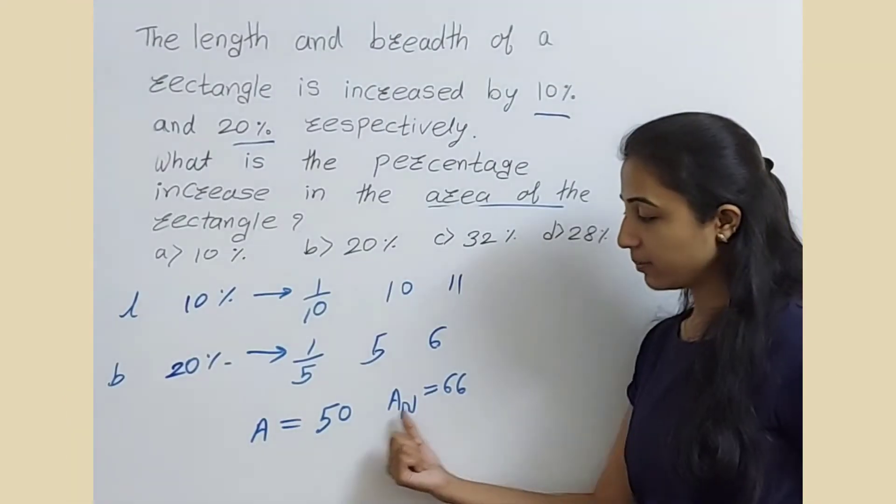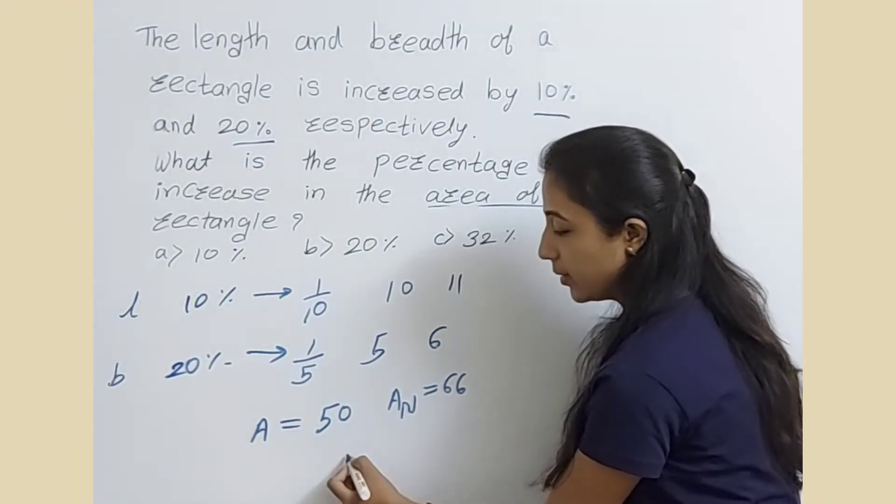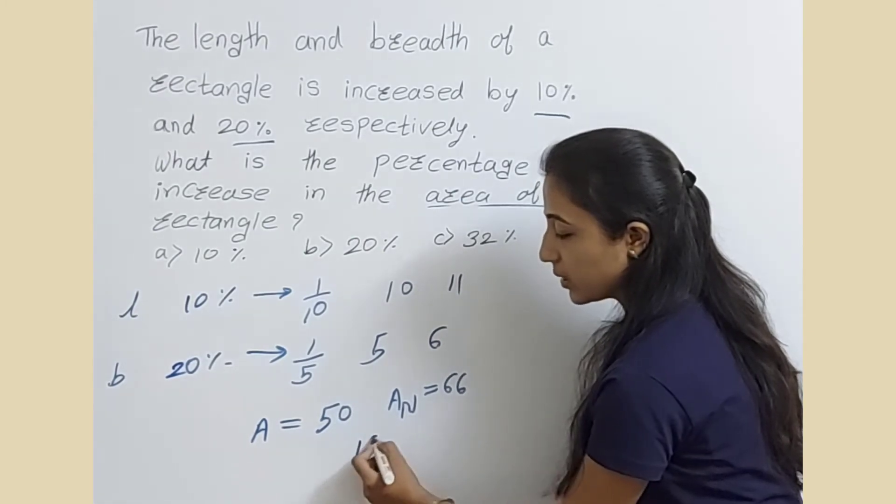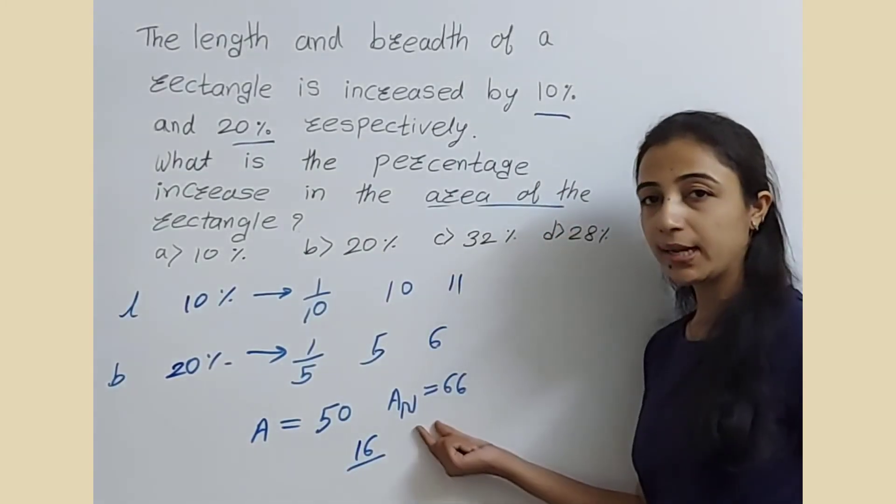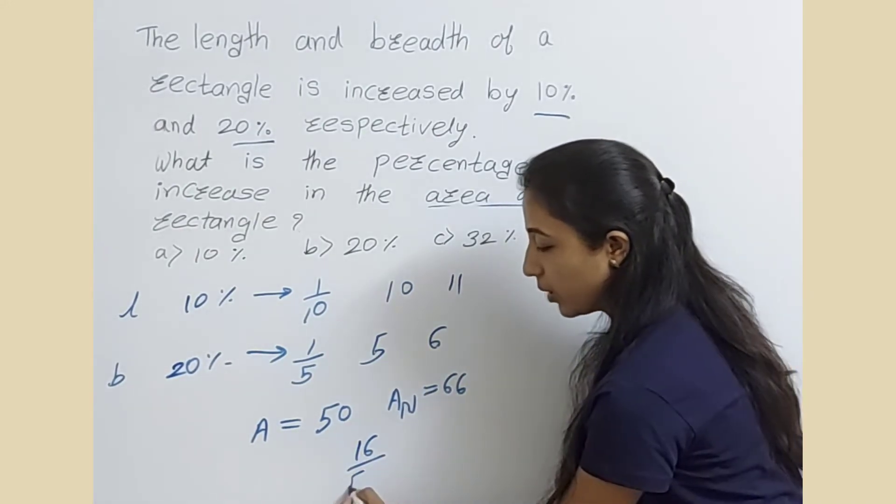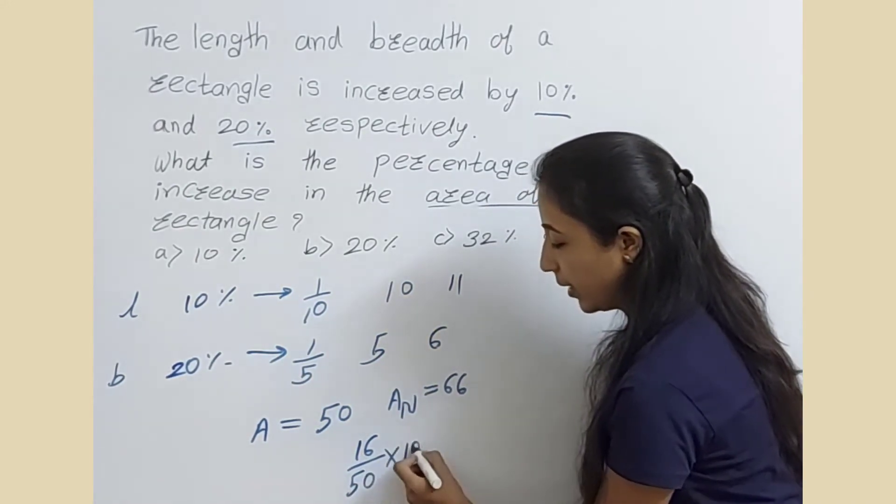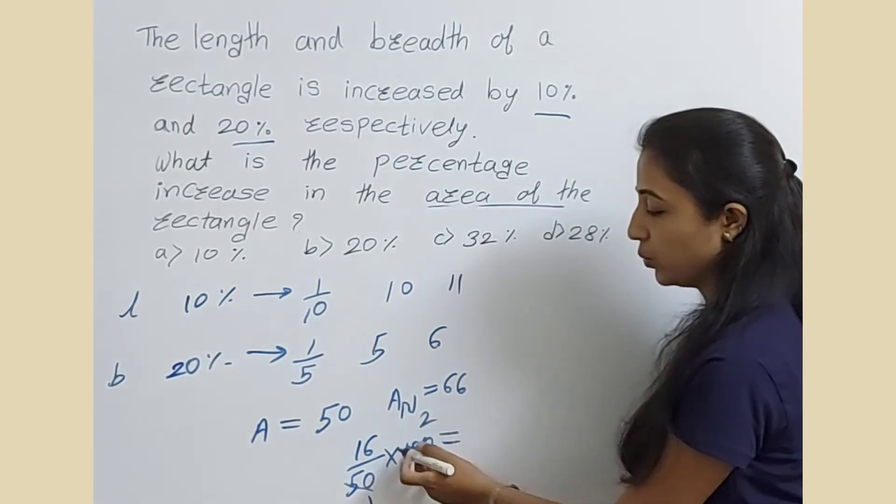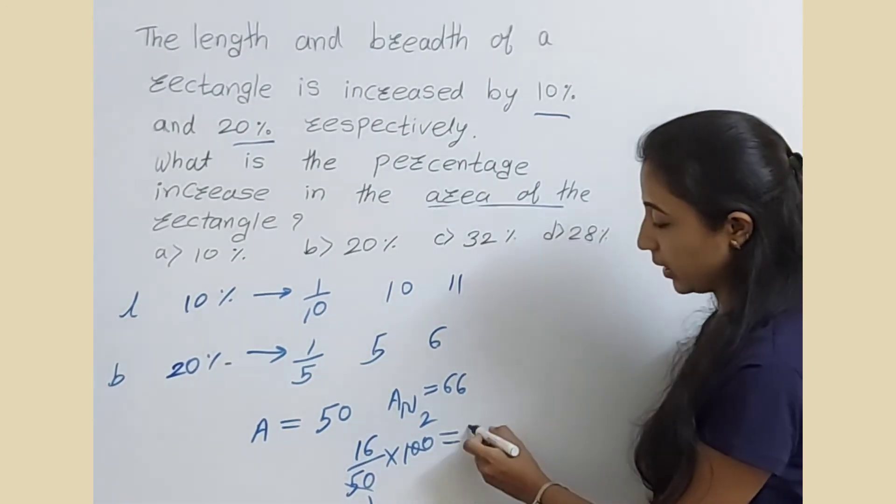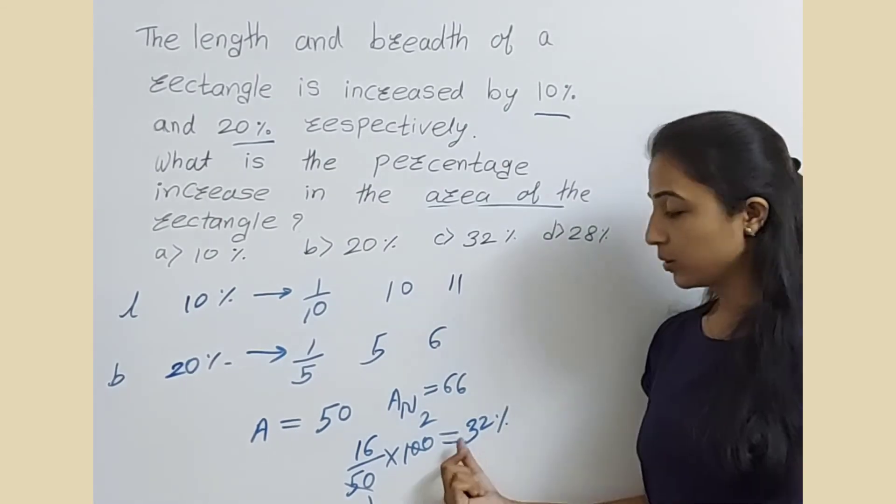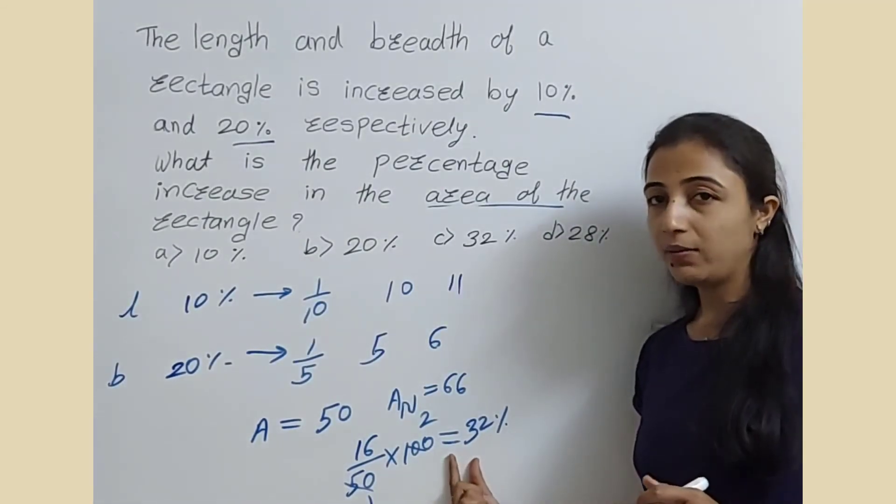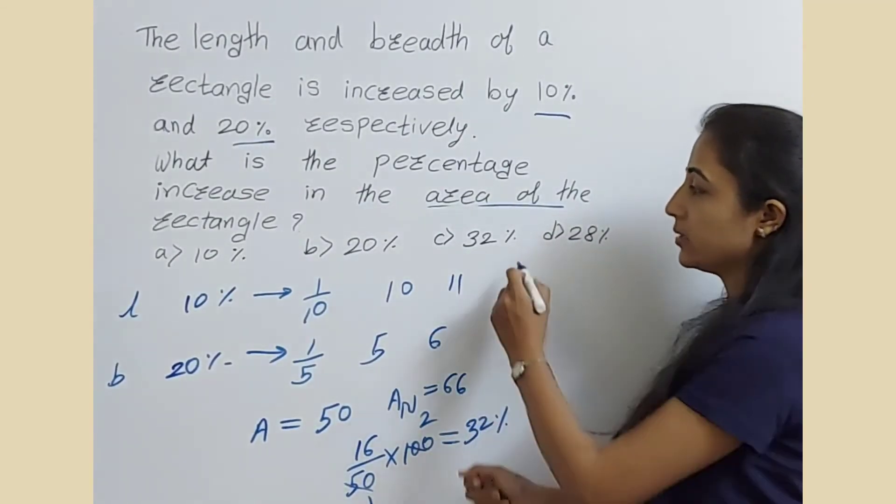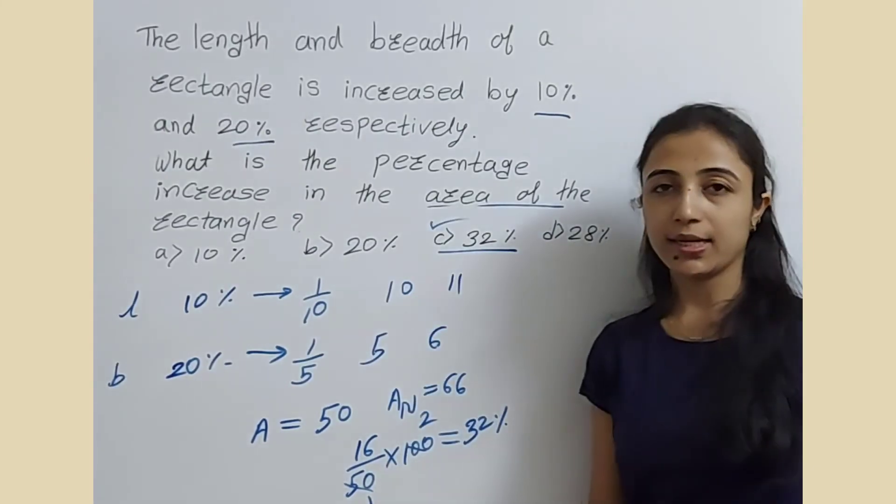If we subtract, 66 minus 50 equals 16. The area increased by 16. To find the percentage, we divide by the old quantity and multiply by 100: (16/50) × 100 = 32%. So the area of the rectangle increased by 32%, which means option C is the correct answer.